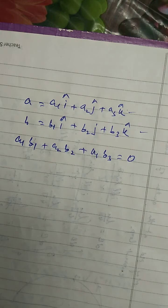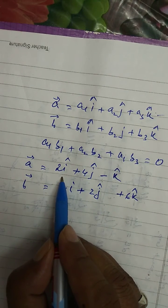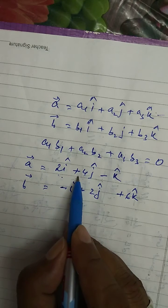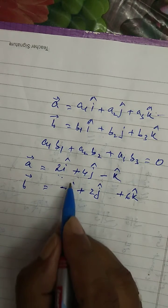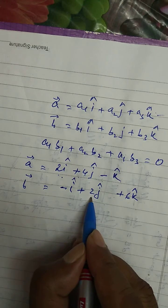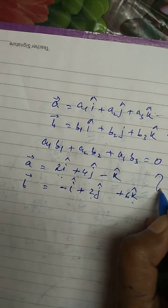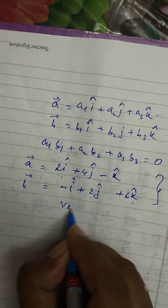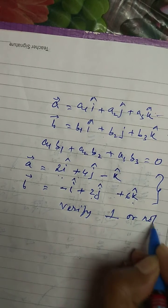Let us take an example. Two vectors are provided: one vector is 2i plus 4j minus k, and another vector b is minus i plus 2j plus 6k. You are asked to verify whether they are perpendicular to each other or not.